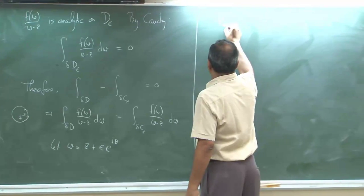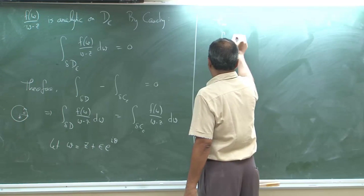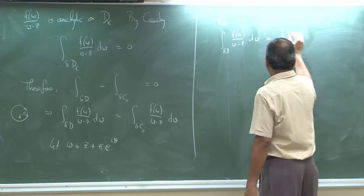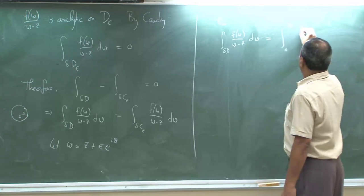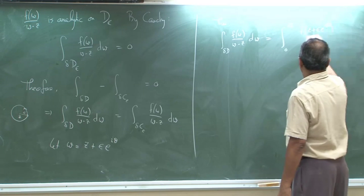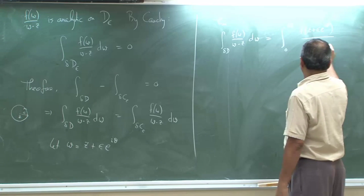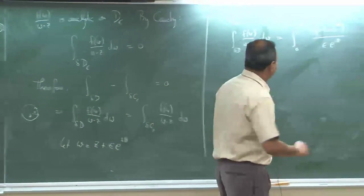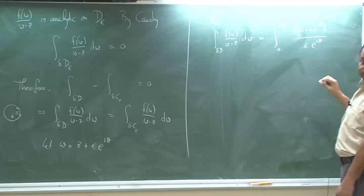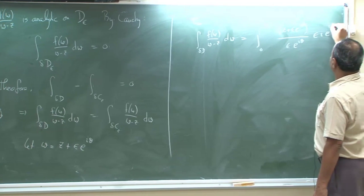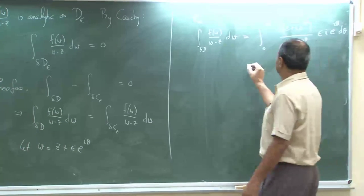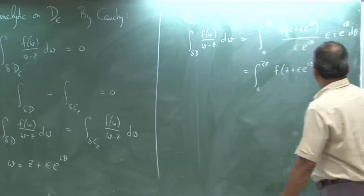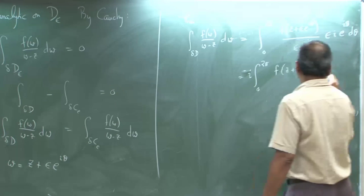Then this equals the integral from 0 to 2π of f(z + ε e^{iθ}) divided by (w − z), which is ε e^{iθ}, times dw, which is ε i e^{iθ} dθ. The ε e^{iθ} factors all cancel out and you get an i outside and dθ.